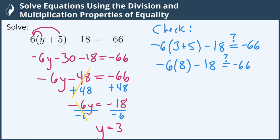Now I'm going to multiply. Negative 6 times 8 is negative 48. Notice I keep carrying everything down here. And negative 48 minus 18 is negative 66. So the two sides do match, which means that y equals 3 is indeed my final solution.